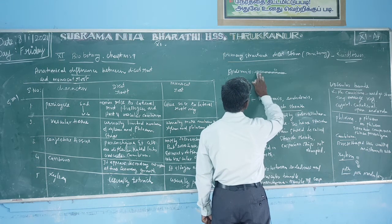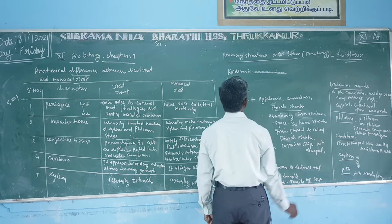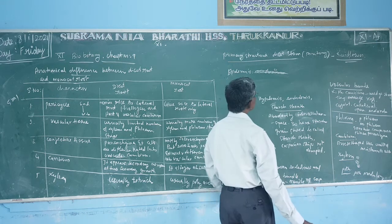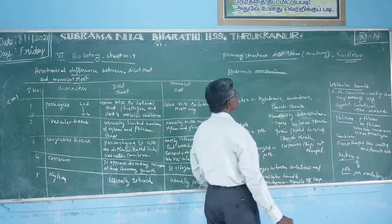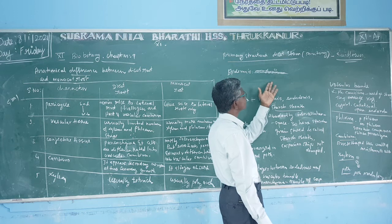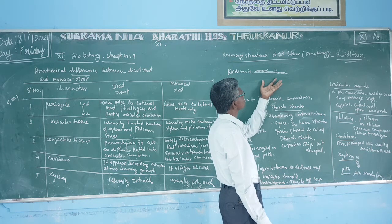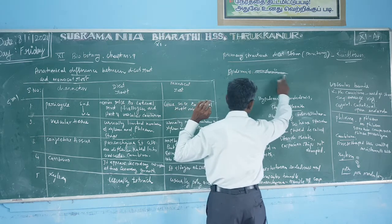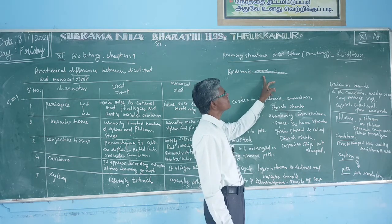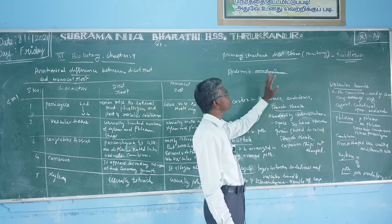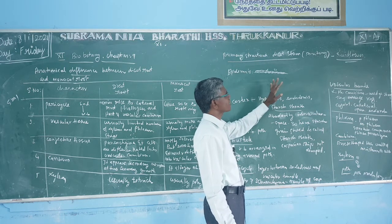The outermost layer of the epidermis consists of cutin, forming a cuticle. Above the epidermis, a thick substance called cutin forms the cuticle, which prevents transpiration and loss of water. So the epidermis is a single layer, tightly arranged, with no intercellular space, and has a thick cuticle that prevents water loss by transpiration.